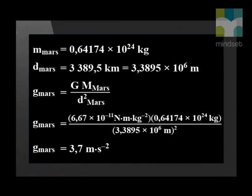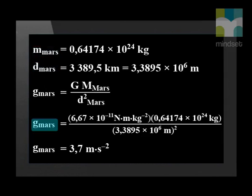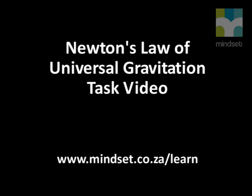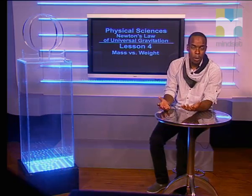You could do the same calculation for other planets to find their gravitational acceleration. For example, using the mass and radius of Mars, we get a gravitational acceleration of 3.7 meters per second squared. Now that we have differentiated between mass and weight, you can try our task on mass and weight in the task video. Other related videos can be found on the Mindset website at www.mindset.co.za/learn. Thank you for watching, goodbye.